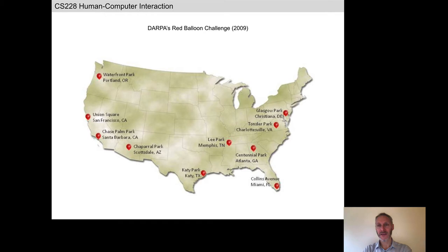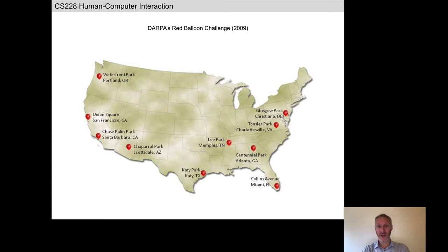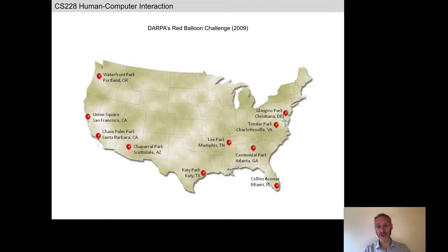We were brainstorming about incentivization strategies — how would you go about incentivizing a group of people to find these balloons? In addition to the question of how to incentivize them, what are you incentivizing them to do? If we're going to incentivize people with cash — the team that finished first got $40,000 from DARPA — it's unlikely you can financially incentivize someone to find a balloon, since the chance of any one person finding one is unlikely.